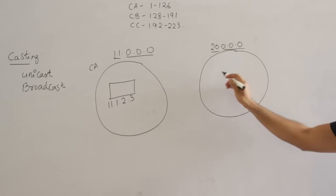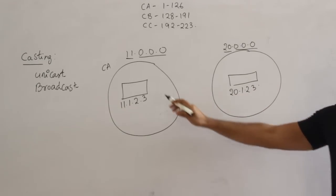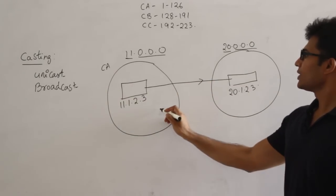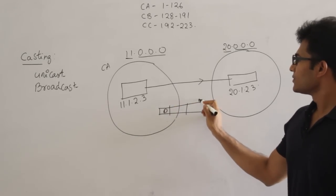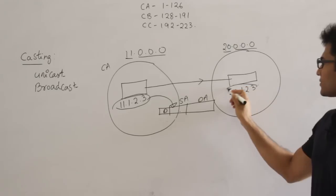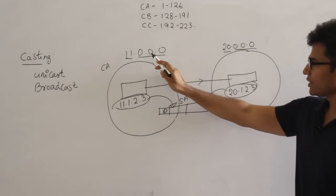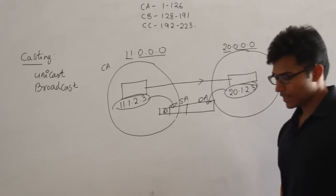Say the destination host has IP address 20.1.2.3. Sending a message from 11.1.2.3 to 20.1.2.3 — one host to one host — is unicasting. In unicasting, a packet is created containing the data, a destination address of 20.1.2.3, and a source address of 11.1.2.3. In a Class A network, a valid number in the network ID part with all zeros in the host ID part represents the entire network.